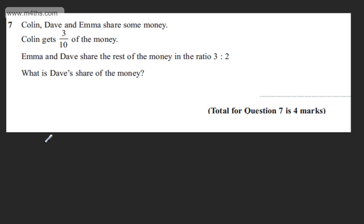As with all of these questions, there are lots of different approaches we could take. What I'm going to do is look now at Dave and Emma's share. If we consider now that Colin has three tenths, they will have one minus three tenths. So the actual amount of money doesn't matter here. All we're looking at now is the fraction of the money. So they have seven tenths of the money or we can say 70%.